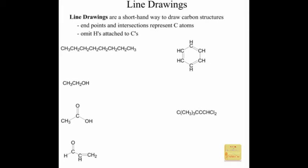Let's talk about the use of line drawings for organic chemistry — a shorthand notation that organic chemists use constantly to save time. We draw lines to represent carbon chains. Any endpoint of a line represents a carbon, and any intersection or bend also represents a carbon atom. For example, a carbon chain can be represented as a zigzag line. This zigzag notation with eight endpoints and bends represents eight carbons.